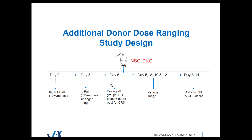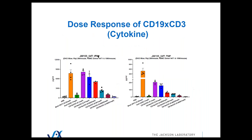We ran a bunch of other PBMC donors for the same kind of experiment. Once again, in the NSG double knockout mouse. Once again, we get these smooth dose responses. In this experiment, we ran OKT3 as a positive control — this is a BioX antibody — and we're seeing high levels of interferon gamma and TNF.